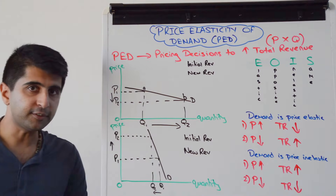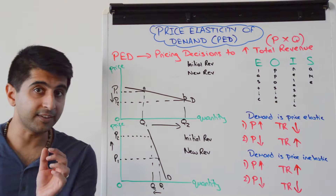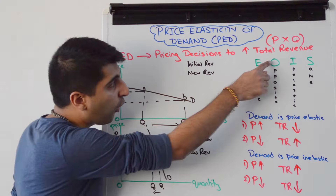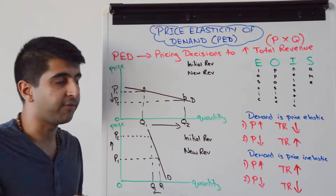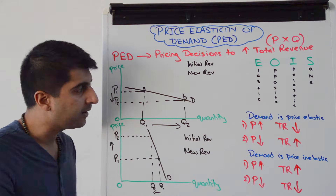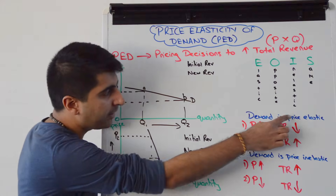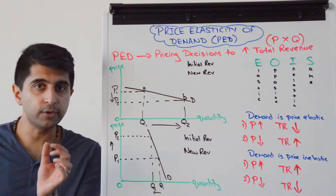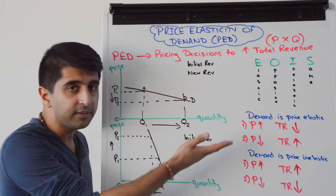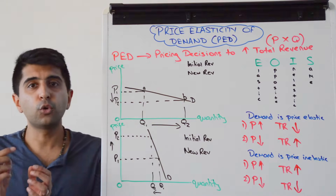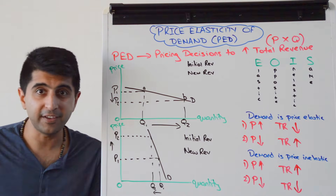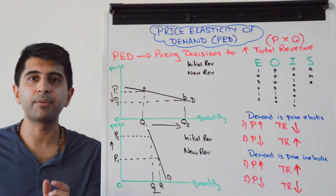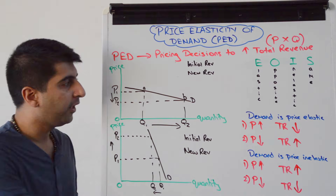If a business knows that demand for their good is price elastic, whatever they do with price, the opposite will happen with total revenue. If the price goes up, total revenue is going to fall — because as they increase that price, quantity demanded is going to drop off significantly. So you're selling a lot less at a slightly higher price, and total revenue is going to fall.